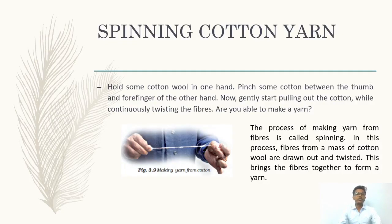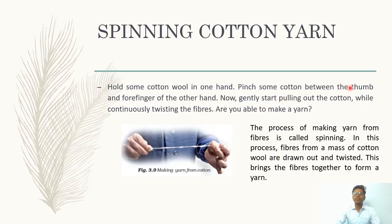Today's new topic: spinning cotton. Hold some cotton wool in one hand and pinch some cotton between the thumb and forefinger of the other hand, as shown in the figure. Gently start pulling out the cotton while continuously twisting the fibers. Are you able to make a yarn? Yarn is made by twisting all the fibers together and attaching them — that is how yarn is made.